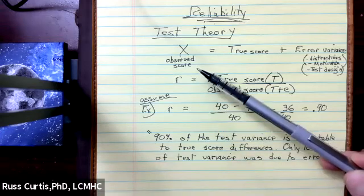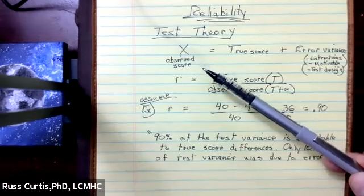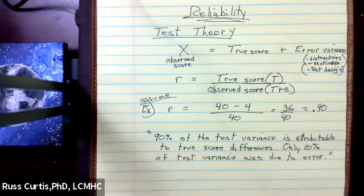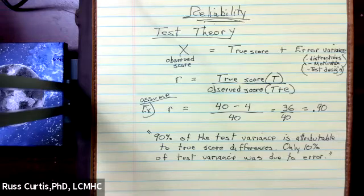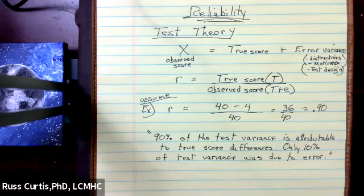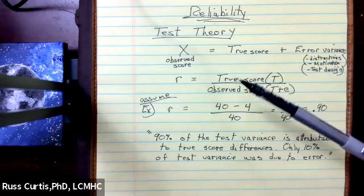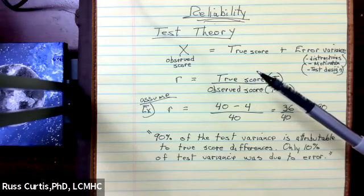But the observed score is the score that we see. It's the score that our clients or subjects make and we see on a test. So whether it's an MMPI or if it's an IQ test or what have you, that is the actual score that we see is what is observed. But that's not the true score according to test theory.